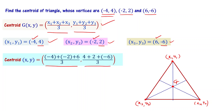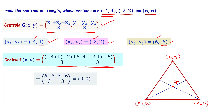This gives us minus 4 plus minus 2 plus 6 divided by 3, which is 0 by 3, and 4 plus 2 plus minus 6 divided by 3, which is also 0 by 3. So the centroid of this particular triangle is 0 comma 0.